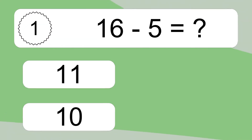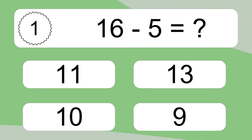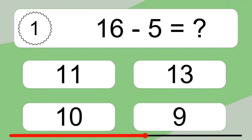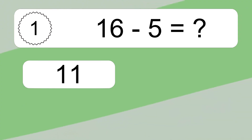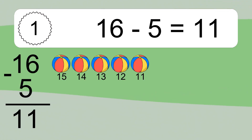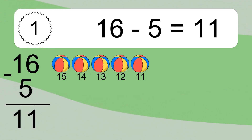16 minus 5 equals what? 16 minus 5 equals 11. Let's count it. 15, 14, 13, 12, 11.